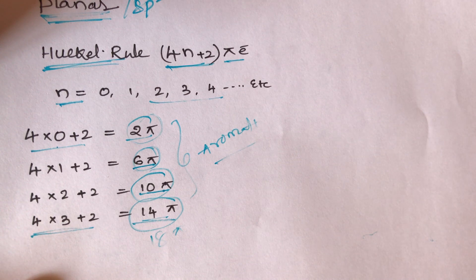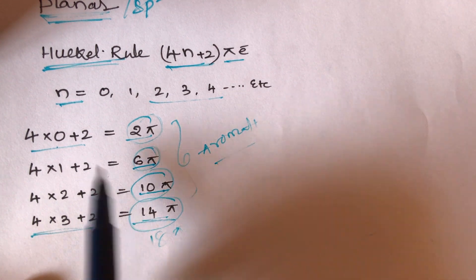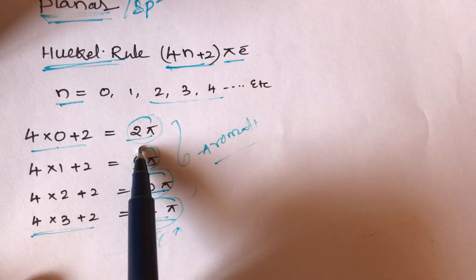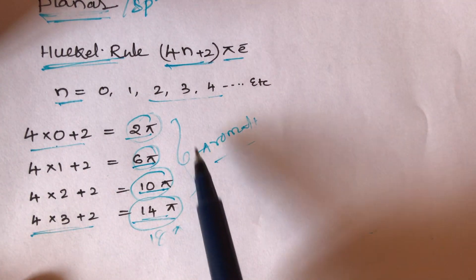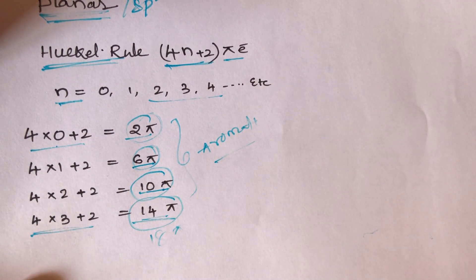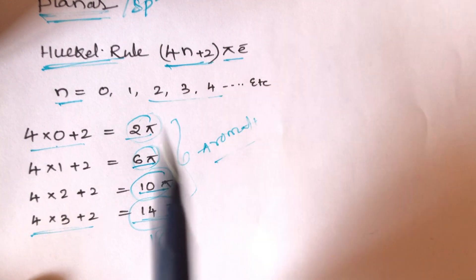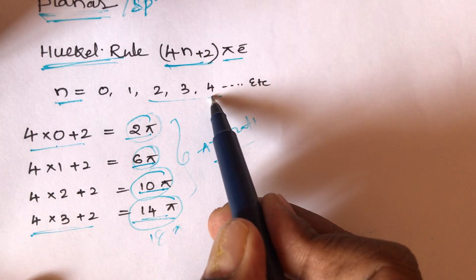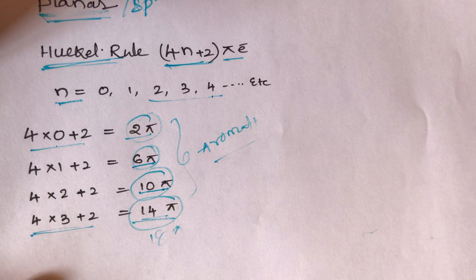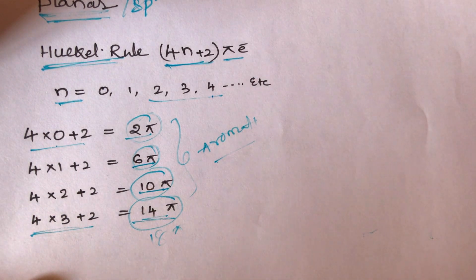For Hückel's rule, with n = 0: 2 pi electrons; n = 1: 6 pi electrons; n = 2: 10 pi electrons; n = 3: 14 pi electrons; n = 4: 18 pi electrons. These are the important electron counts for aromatic compounds.